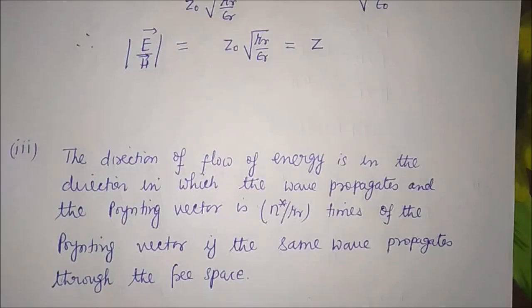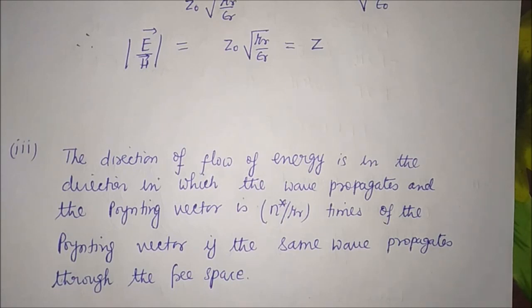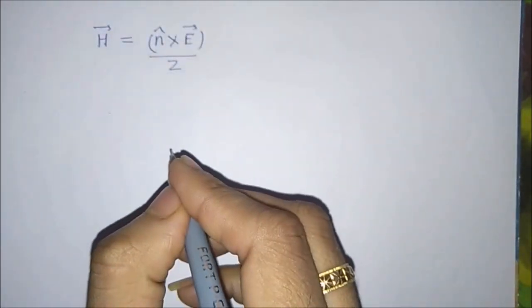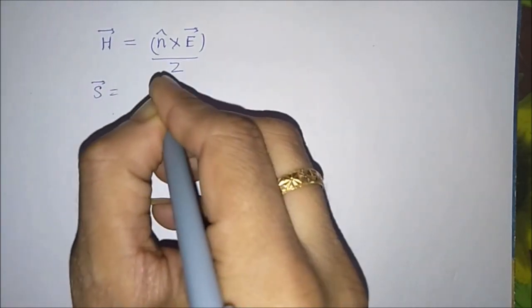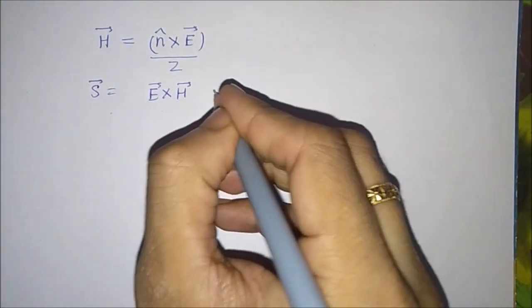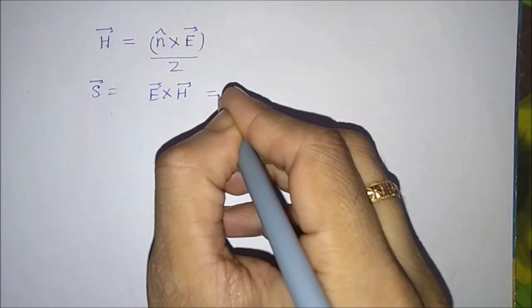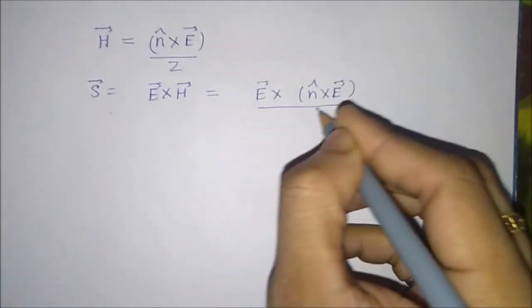The third consequence: the direction of flow of energy is in the direction the wave propagates, and the Poynting vector is n*/mu_r times the Poynting vector if the same wave propagated through free space. This can be shown as follows: H equal to n̂ cross E / z. The Poynting vector S equals E cross H, so substituting H, S equals E cross (n̂ cross E / z).